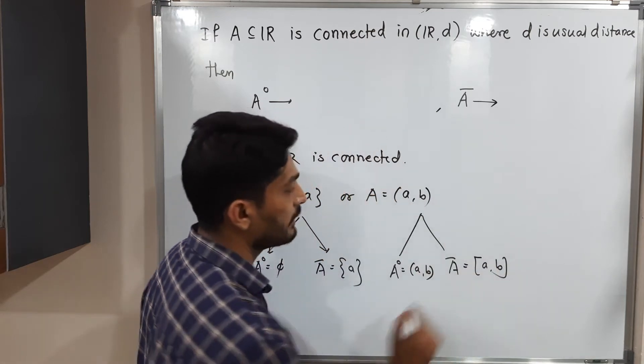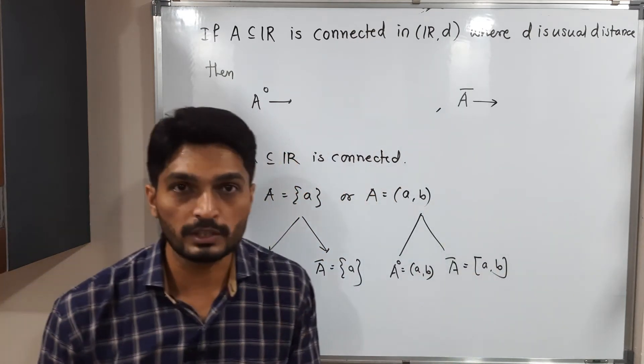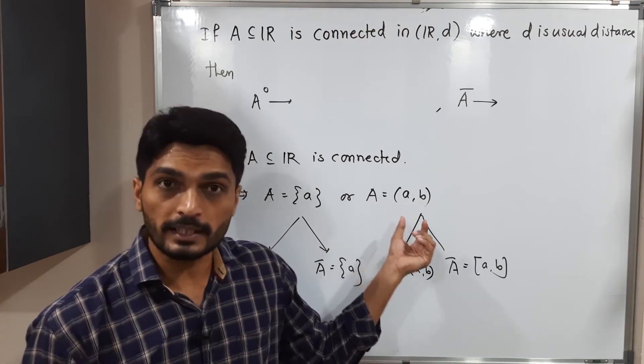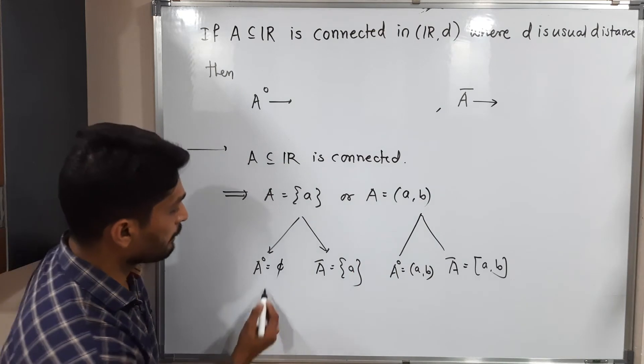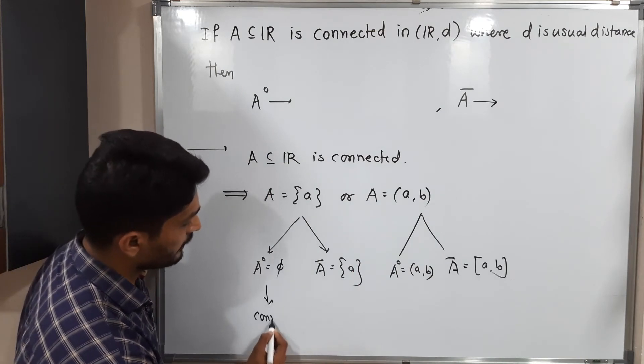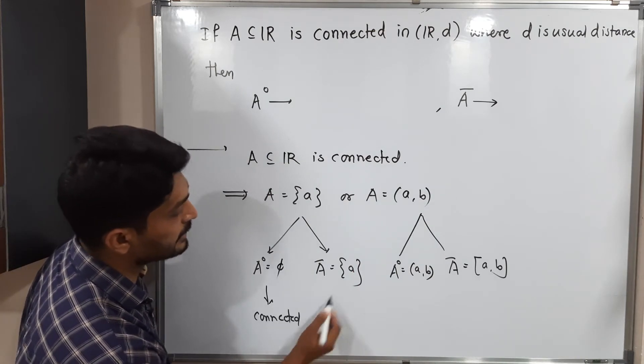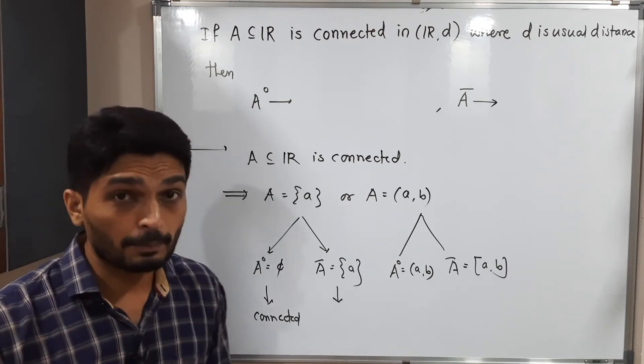If you have an open interval, then also we have its closure as a closed interval. And if you have a closed interval, then also its closure will be a closed interval. So see, φ (empty set) is connected, since it cannot be expressed as a union of two non-empty separated sets.